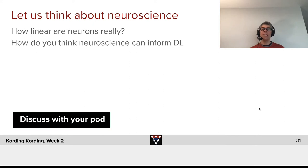And now I want you to think a little bit about neuroscience. I want you to think about one issue, how linear are neurons really, because I didn't tell you the whole story about neurons. And the second one is I want you to discuss a little bit how you think neuroscience can inform deep learning. Please discuss this with your pod.